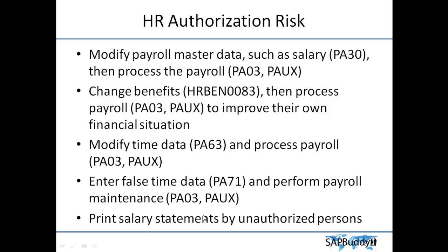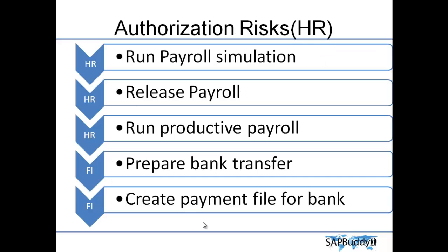Or, for example, printing salary statements by an unauthorized person — this is a very critical authorization, because salary statements are very confidential information. Who is supposed to print them needs to be well defined. If you give authorization to print salary statements to unauthorized people, they can print them and misuse the same, print them for somebody else, or print their own with a different amount. By going into PA30 and changing the amount, then making a salary statement be printed, this creates a very big impact on the organization. So we have identified this risk.